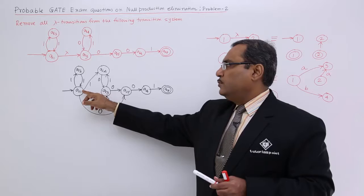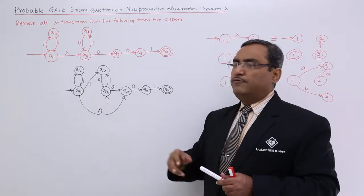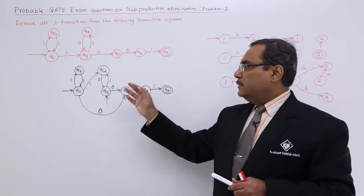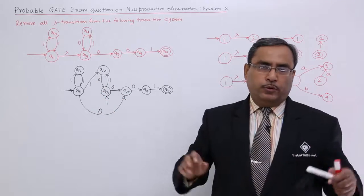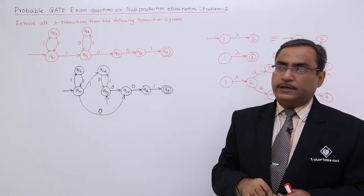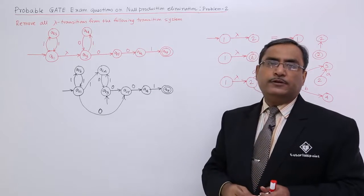So to that same next state with the label 1, edge will be drawn from q1. And as q3 was not final state, q1 we did not make as a final state. So in this way the problem has been resolved.